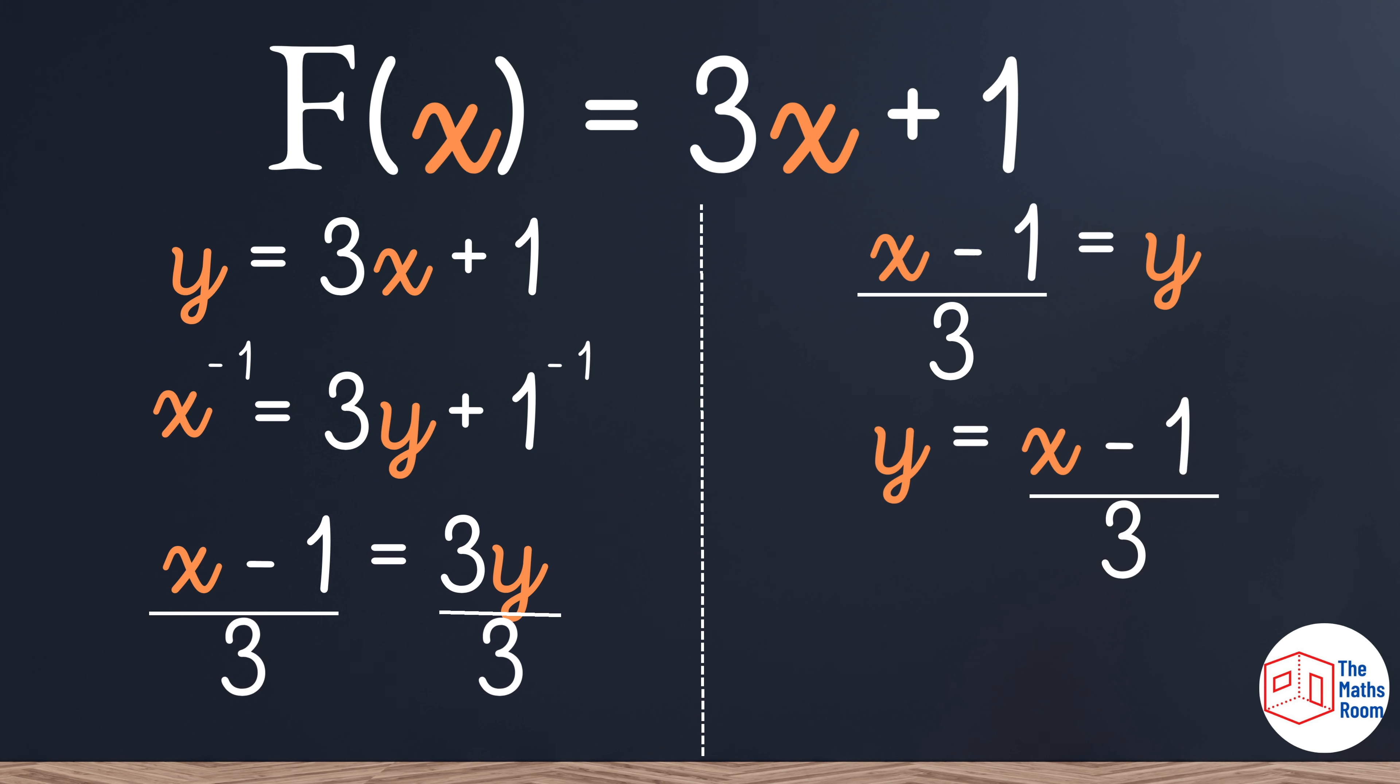Just rewriting it in the standard format so that y is on the left. I haven't changed anything there. Our final step is then going to be switching it back to f of x the inverse format is equal to x minus one over three.